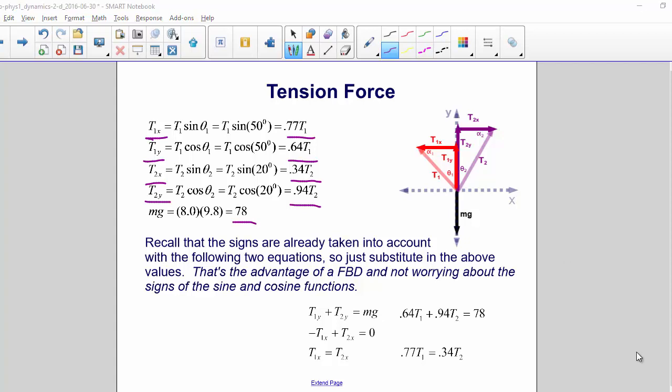Then we can substitute those values into our equations, and we get 0.64 T1 plus 0.94 T2 equals 78, and 0.77 T1 equals 0.34 T2.